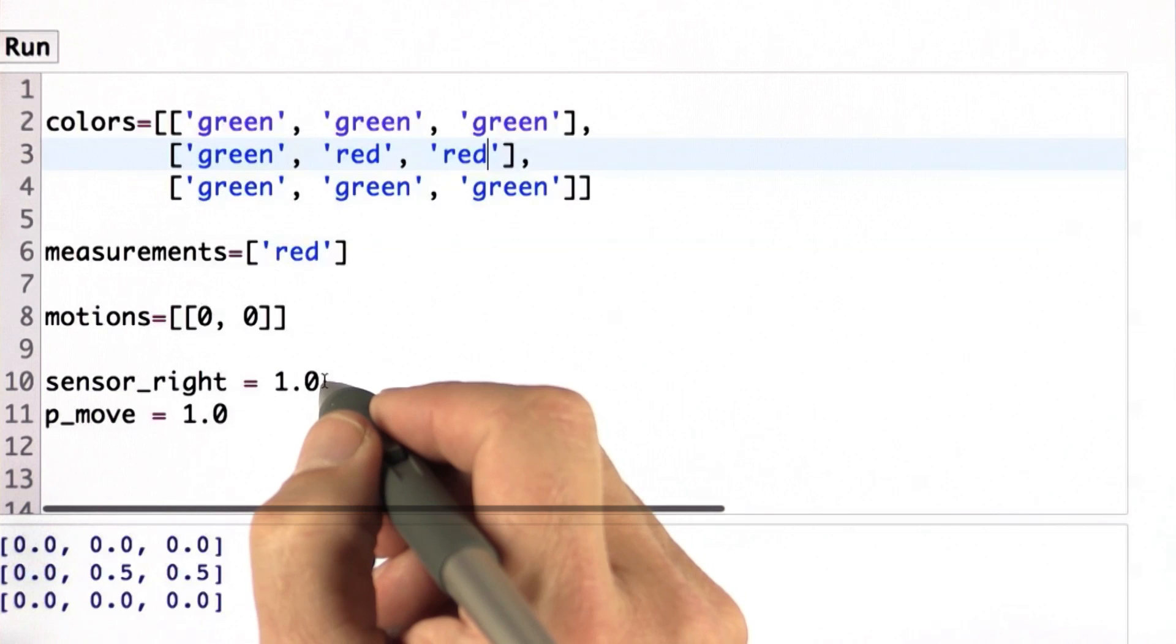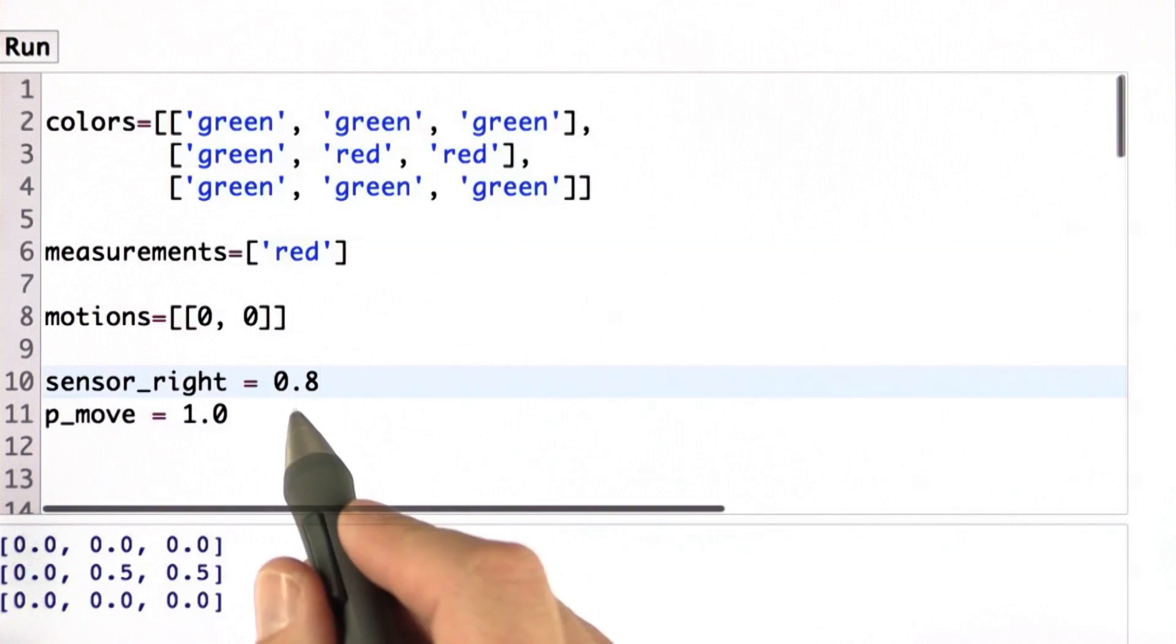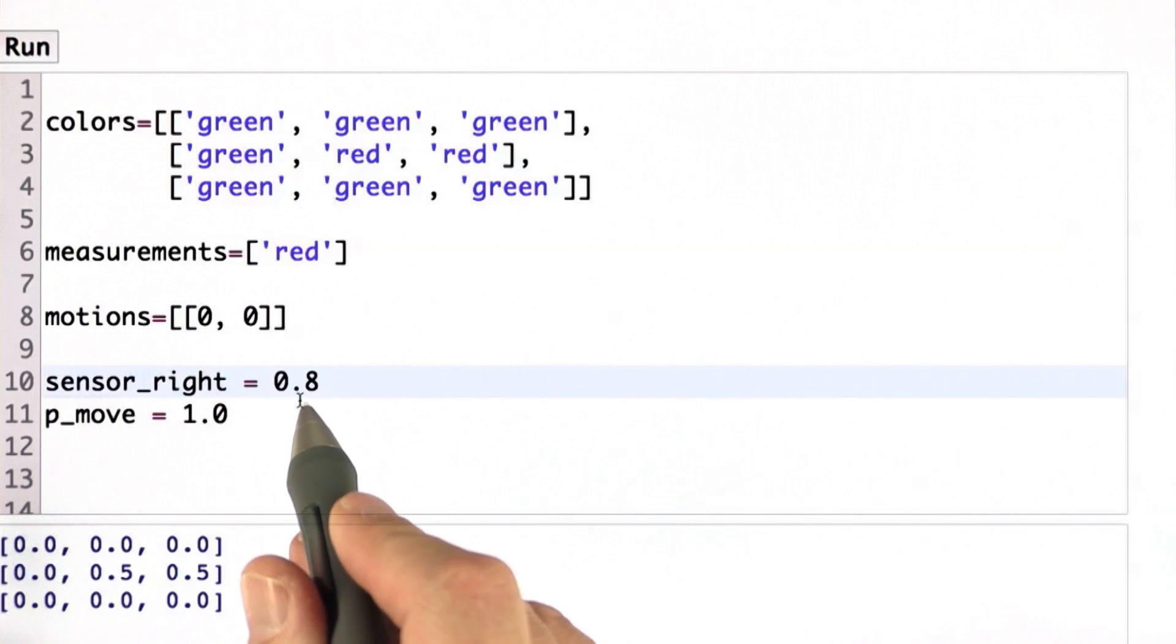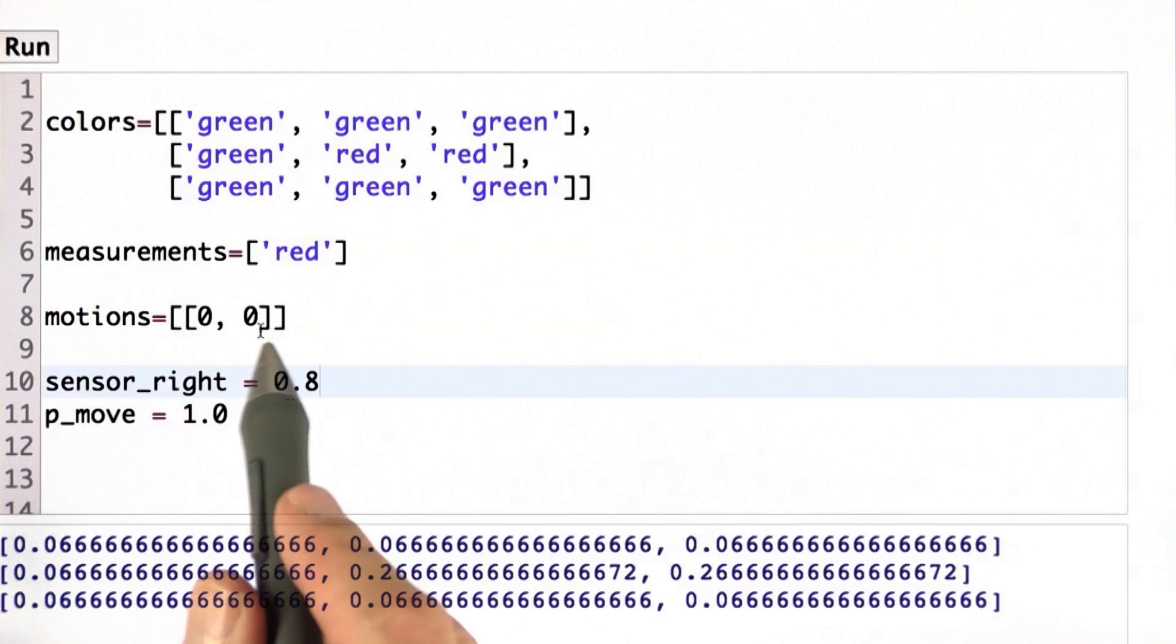Let's now model a noisy sensor and set the sensor_right to 0.8. Your code should now compute the following: a 0.06 for almost all grid cells except the two winning ones, which come in at 0.26 and 0.26 each. So check that your code does this.